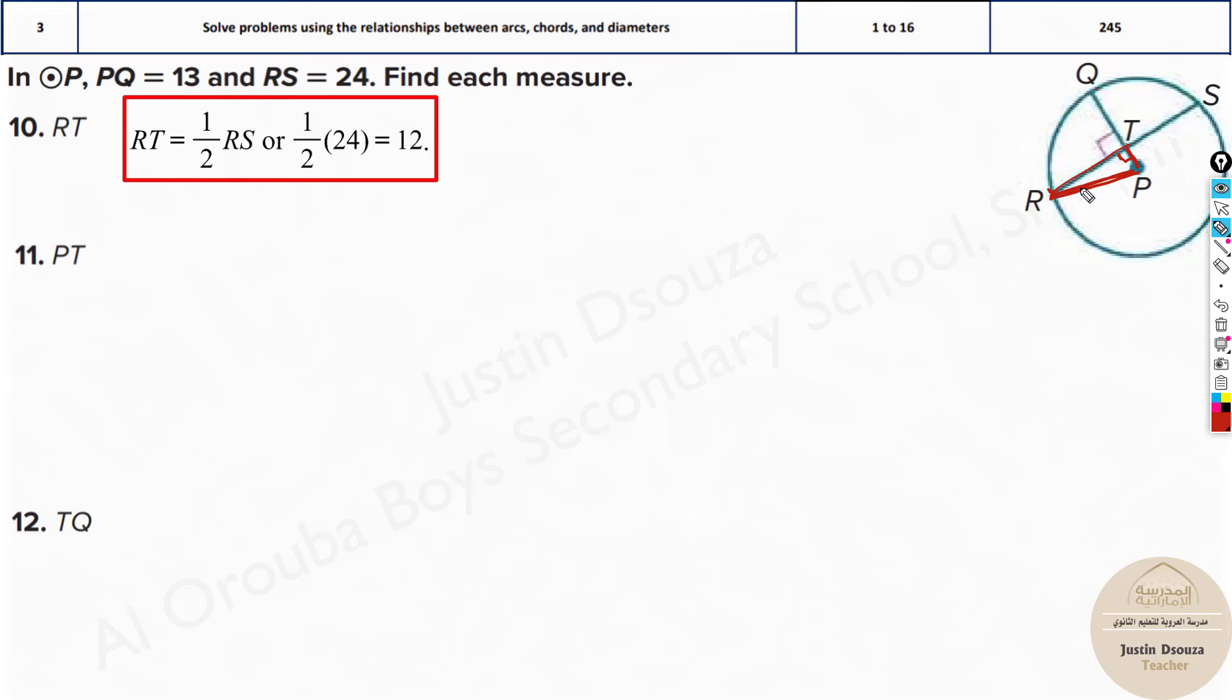Now I know Pythagorean theorem is RP² equals RT² plus PT². Now I can just substitute the known values. This is same as the radius value. What is it? PQ is 13, so this is also 13. What about RT? We just now found out it's 12. And now just substitute over here.